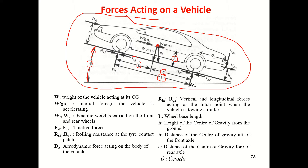Here Fx_f is the traction force acting in the x-direction at the front wheel, where the tire and road make contact. The force at the rear is denoted as Fx_r — traction force in the x-direction at the rear wheel.